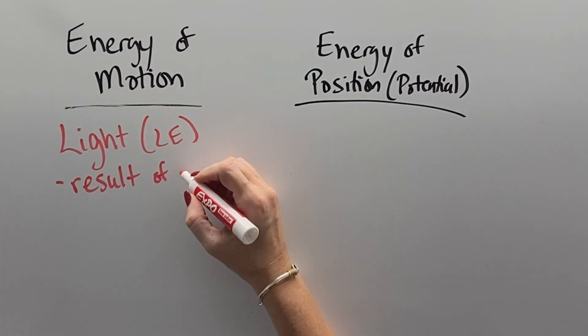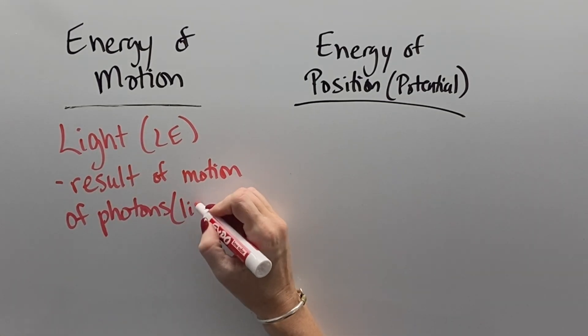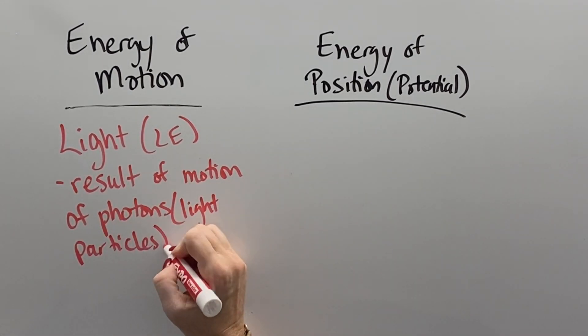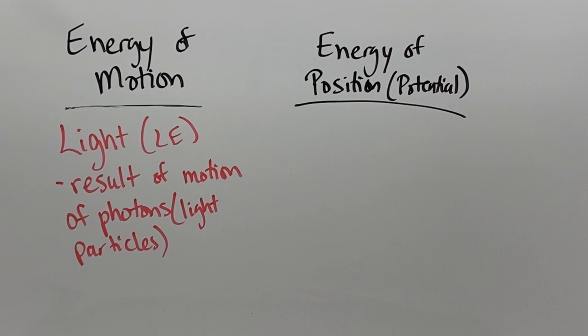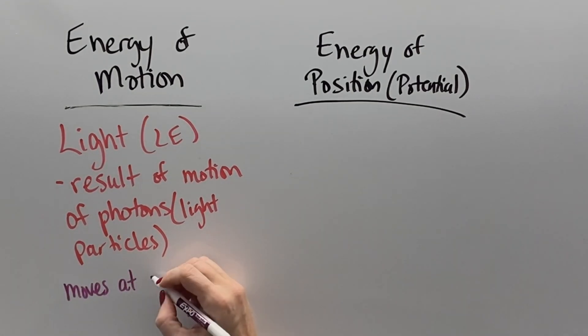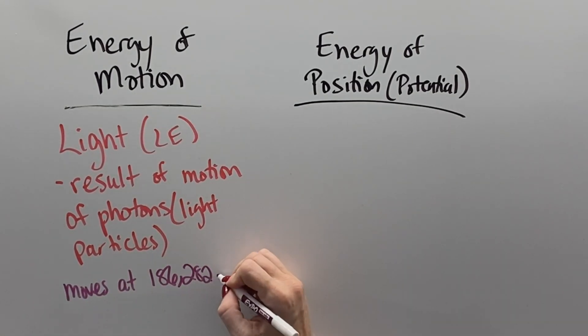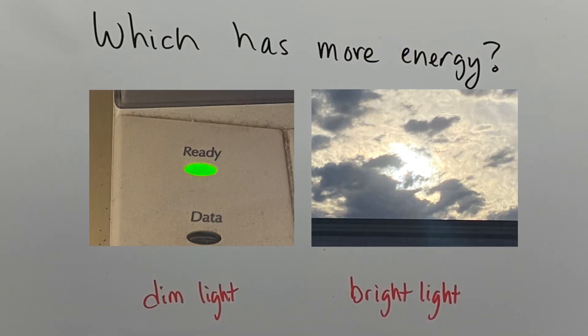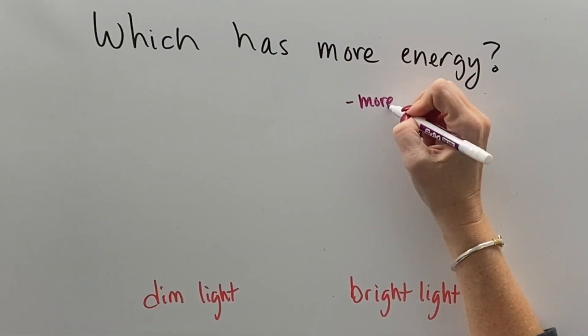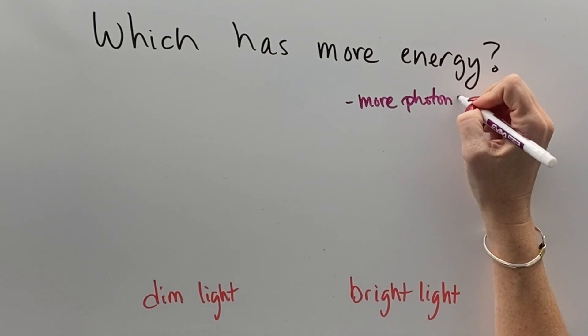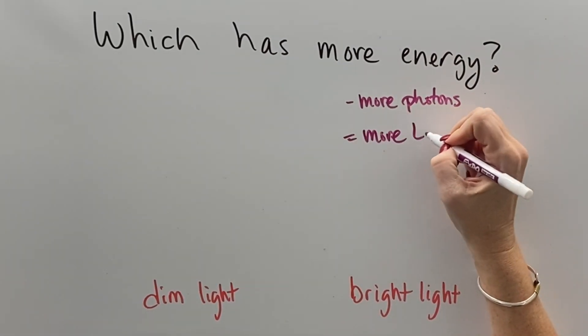Light energy is the result of these particles called photons, that are both a wave and a particle that move through space at about 186,000 miles per second, incredibly quickly. If we compare a dim and a bright light, the bright light has a whole lot more energy because it has more photons that are moving.